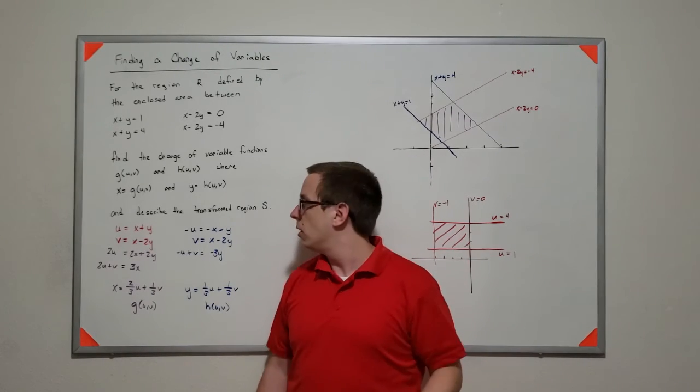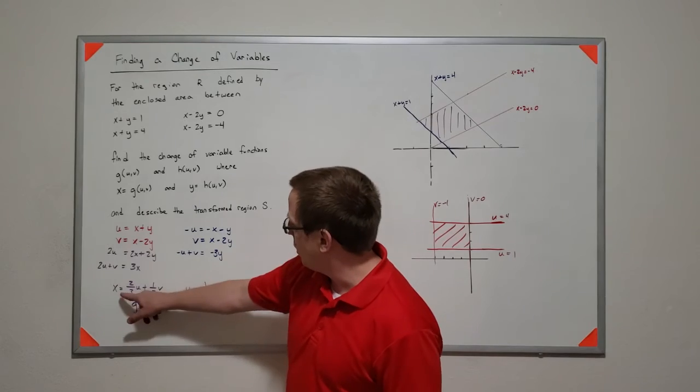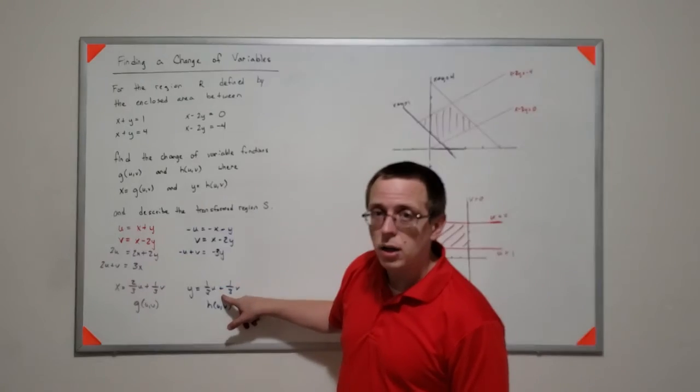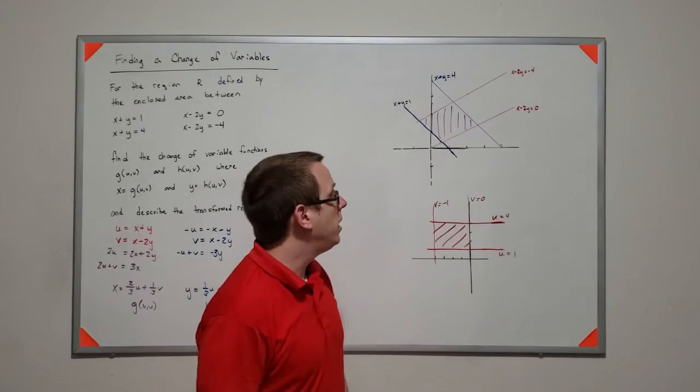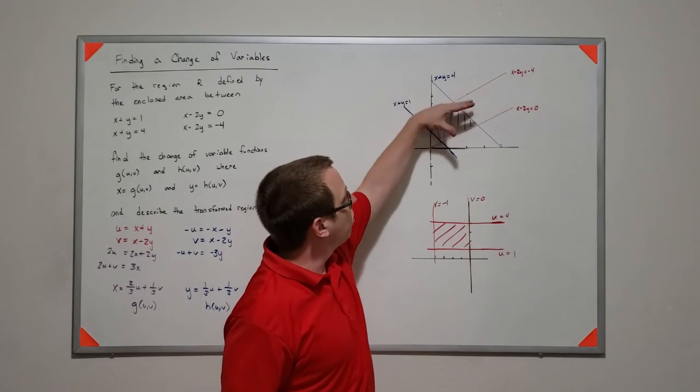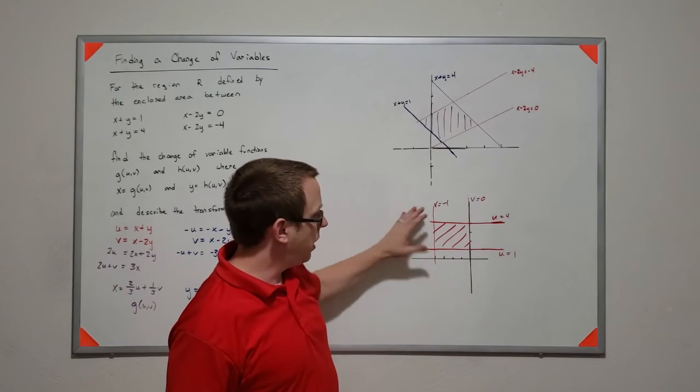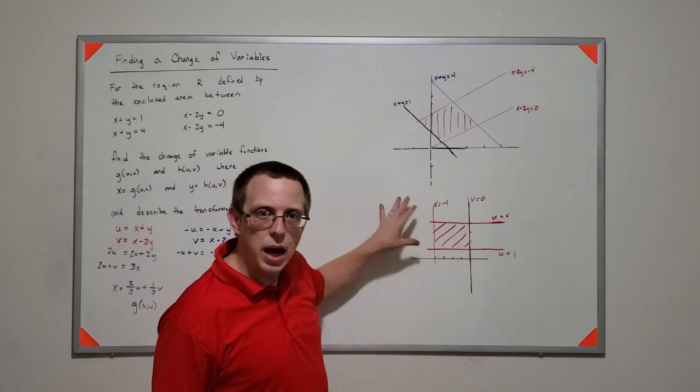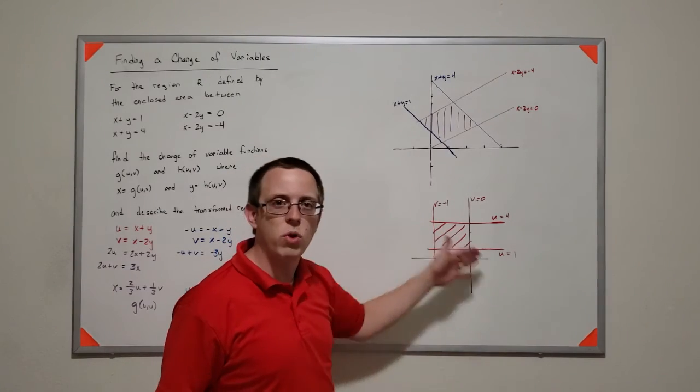And then by computing, now that I have these functions here, I can compute a Jacobian. And instead of the limits of integration being really weird over here, it turns out that they're nice and clean. And they're on this rectangle.